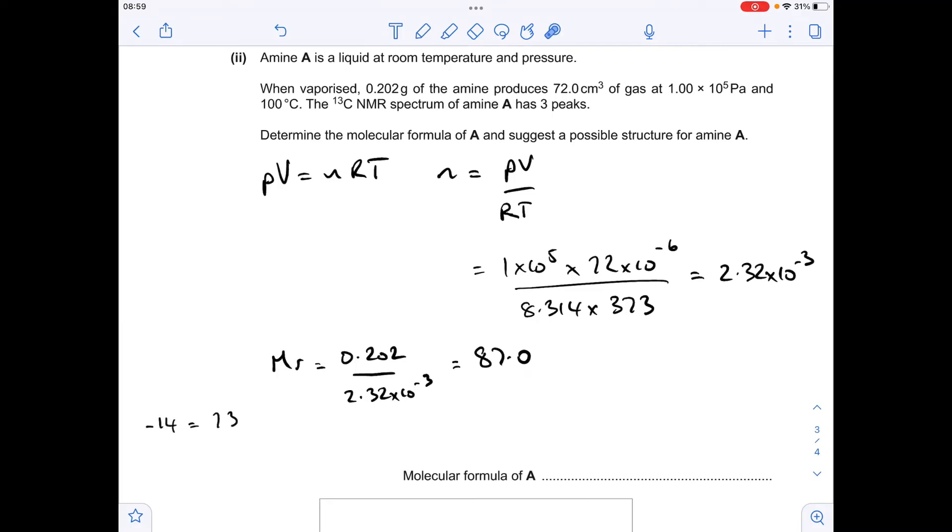We know it's an amine so take 14 off for the nitrogen, leaving 73. How many carbons? It's going to be five, so take 60 (5×12 for those five carbons) away from 73, leaving 13, so this must have 13 hydrogens. The molecular formula is C₅H₁₃N.